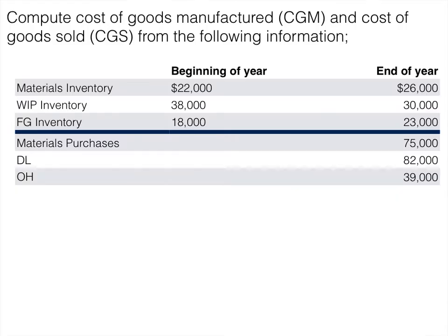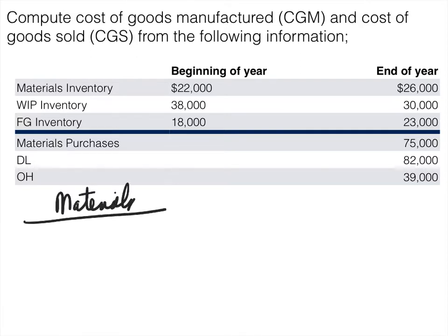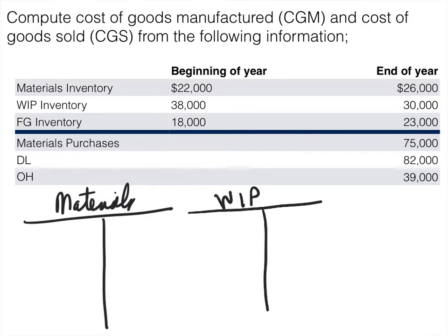We're given some simple information about our three inventory accounts that a manufacturing company would have, as well as some information on direct labor, overhead, and material purchases. We're going to draw our T-accounts for our three inventory accounts: materials, work in process, and finished goods.